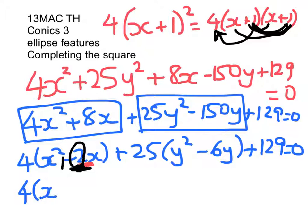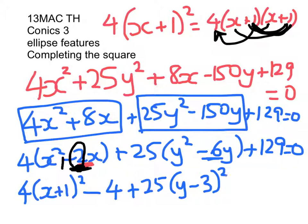We get 4(x + 1)², and now I have to subtract off the accidentally added 4. Now here I'm going to do the same thing. Half of negative 6 is negative 3. So 25(y - 3)² is going to match up on this, but I've accidentally added in (-3) × (-3) = 9 times 25. So I've added in 225. I need to take that out.